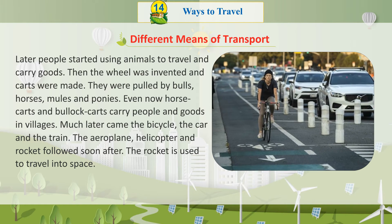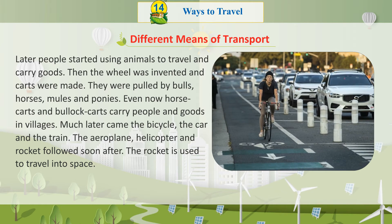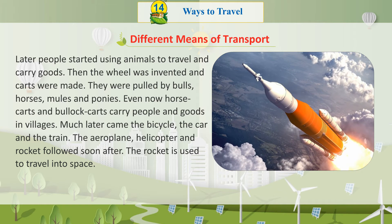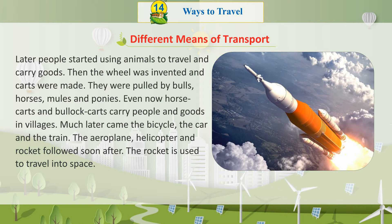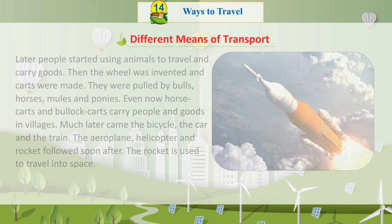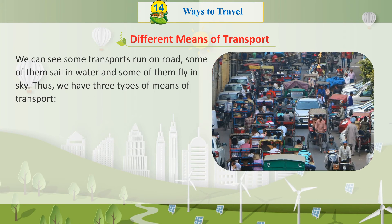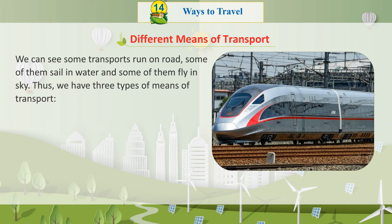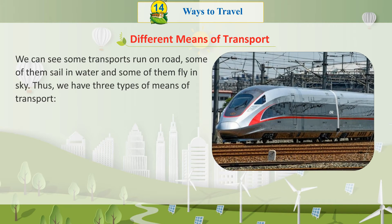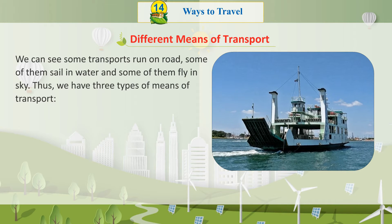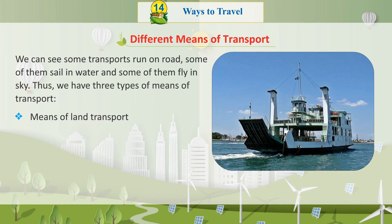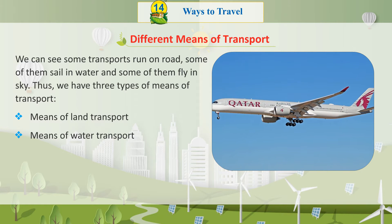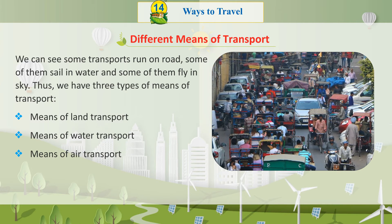Much later came the bicycle, the car, and the train. The aeroplane, helicopter, and rocket followed soon after. The rocket is used to travel into space. We can see some transports run on road, some sail in water, and some fly in the sky. Thus, we have three types of means of transport: means of land transport, means of water transport, and means of air transport.